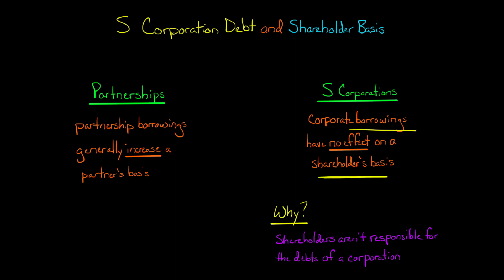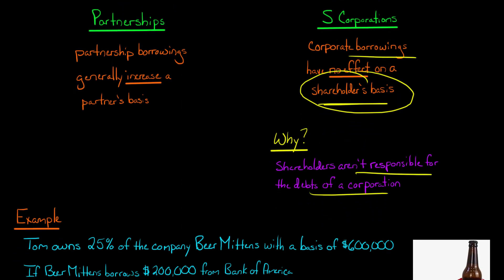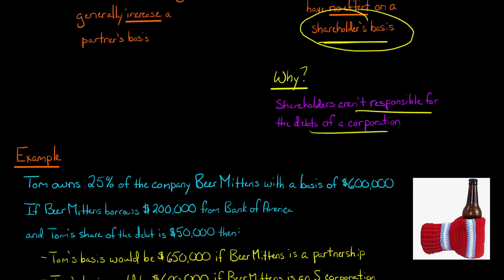There are a couple of exceptions, which we're going to get to, but the general rule is the S corporation goes out and borrows money from a bank — that's not going to have any effect on the basis of the shareholders. The reason for that is that shareholders aren't responsible for the debts of a corporation. So let's do an example, and then we'll dive into a little more complexity.